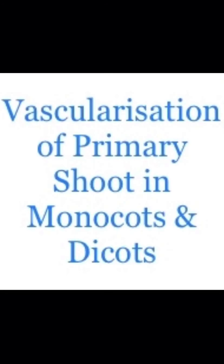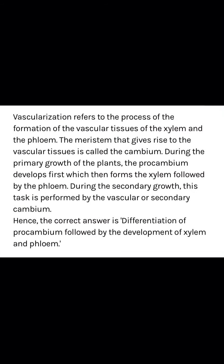Hello everyone. Today we will discuss the vascularization of primary shoot in monocots and dicots. Vascularization means the development of two conducting tissues — xylem and phloem — in plants, how they develop and how the internal structure of these stems looks like. Vascularization refers to the process of formation of vascular tissues of the xylem and phloem. The meristem that gives rise to vascular tissues is called the cambium.